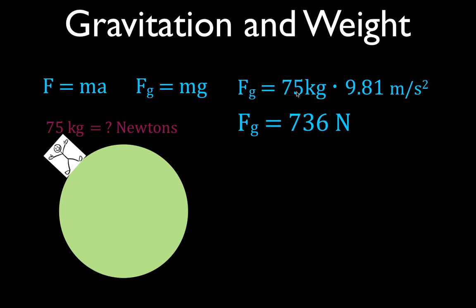One way to calculate your weight is with Newton's second law. The other way is with Newton's law of universal gravitation, which says the force of attraction between two objects equals G — the gravitational constant — times the mass of one object, like the mass of the Earth, times the mass of the other object, which is you at 75 kilograms.